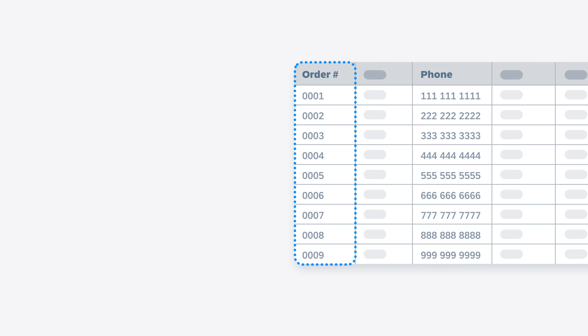These order numbers, for example, can be added up, but doing so won't provide any useful information, as they're meaningful only as unique identifiers. The same applies to phone numbers, postal codes, and geographical coordinates.